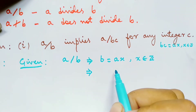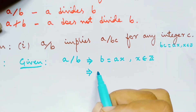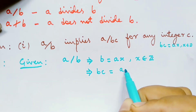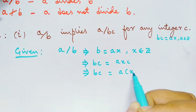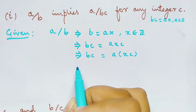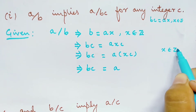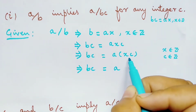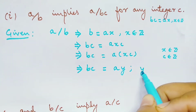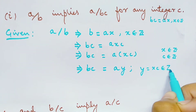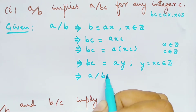From this equation, we want to show that bc is equal to a times some integer. So we multiply c on both sides and group x and c together. We have bc equal to a times xc. Since x is an integer and c is also an integer, the product of two integers is again an integer, say y, where y equals xc, which belongs to the set of integers. So it implies that a divides bc.